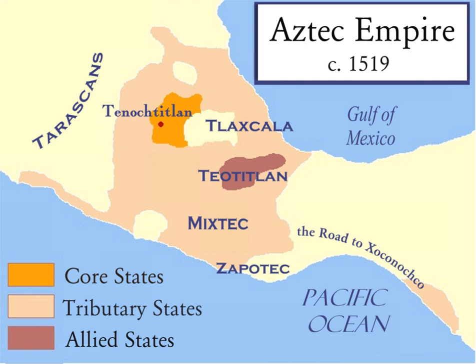336 BCE saw the rise of Alexander the Great, who forged an empire from various vassal states stretching from modern Greece to the Indian subcontinent, bringing Mediterranean nations into contact with those of Central and Southern Asia, much as the Persian Empire had before him. The boundaries of this empire extended hundreds of kilometers.